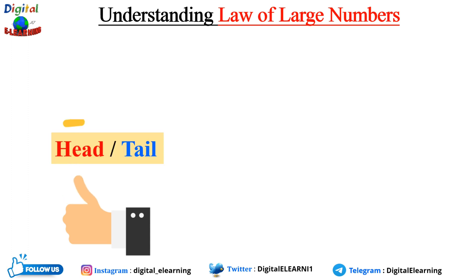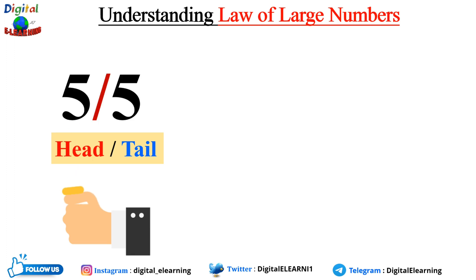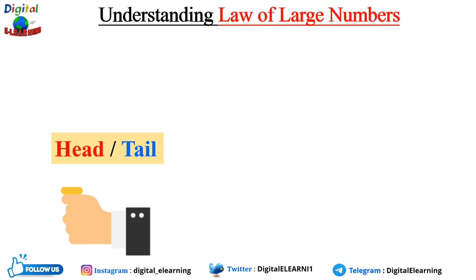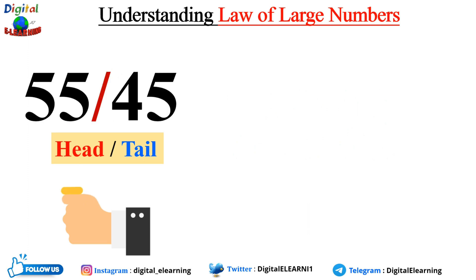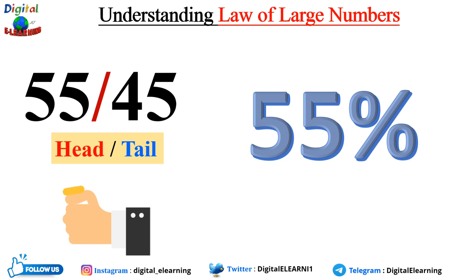Imagine you are flipping a fair coin. You know there is a 50% chance of getting a head and a 50% chance of getting a tail. If you flip the coin 10 times, ideally you should get 5 heads and 5 tails. To demonstrate the Law of Large Numbers, we conduct a series of coin flips with different sample sizes. With a sample size of 10, we record 7 heads and 3 tails, resulting in a 70% proportion of heads. For the next 100 flips, we get 55 heads and 45 tails, resulting in a 55% proportion of heads.